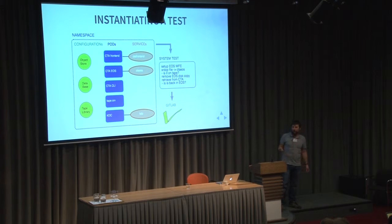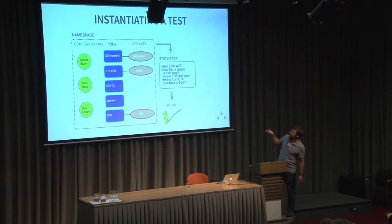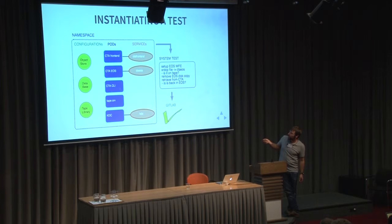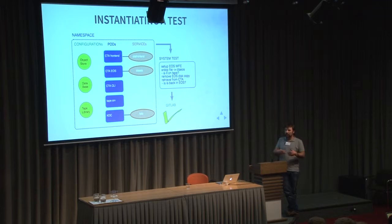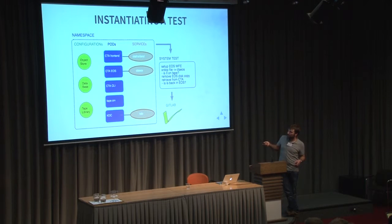That's what our Kubernetes instance for CTA and EOS tests looks like. This is a test namespace. We have the object store configuration, database configuration, and tape library configuration. The various pods we need: a CTA front-end that runs the CTA front-end service, the EOS instance which runs on a single pod and exposes the CTA-EOS instance, CTA CLI that allows passing commands interactively, the tape server which uses one tape drive and does the actual tape transfers, and the KDC — the Kerberos authentication realm. We run one Kerberos realm per namespace, with our own set of users so we have no external dependencies. All service accounts are defined internally, and we're not interacting with the rest of the world.